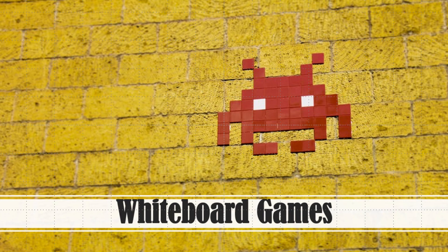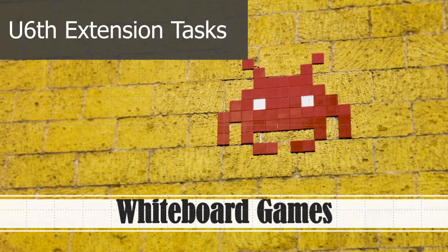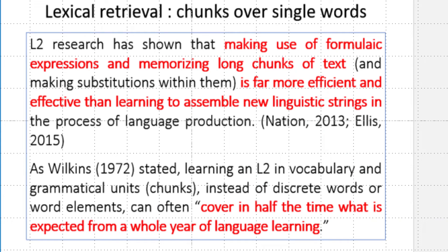The following example is based on my real Upper Sixth students' lessons. We've finished the syllabus so we're doing extension reading. I found this quotation: 'The lexical retrieval of chunks over single words — L2 research has shown that making use of formulaic expressions and memorizing long chunks of text is far more efficient and effective than learning to assemble new linguistic streams in the process of language production.' This indicates the need for students to analyze a whole context instead of traditional vocab learning; building vocab through a large chunk of reading is double the efficiency and efficacy.